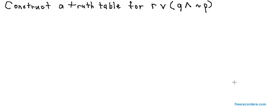Our next problem asks us to construct a truth table for the statement R OR parentheses Q AND not P. What's different about this problem is the fact that there are here not just two variables like in our last truth table, but three variables P, Q, and R.